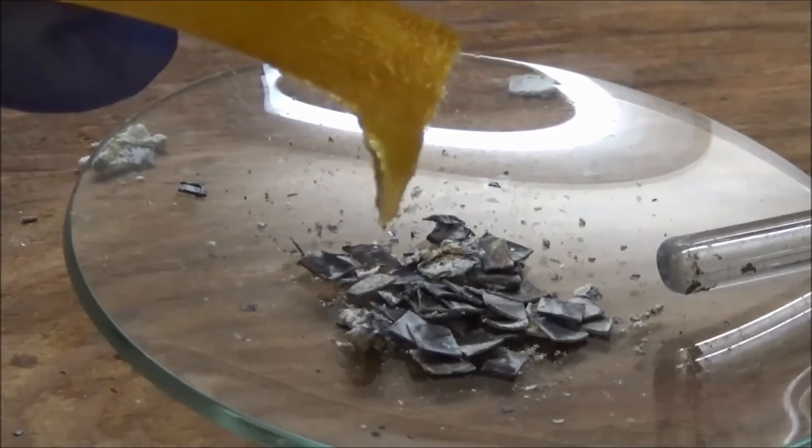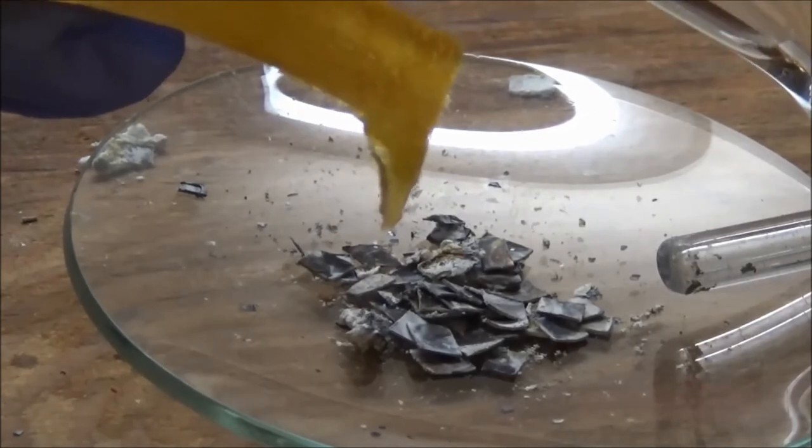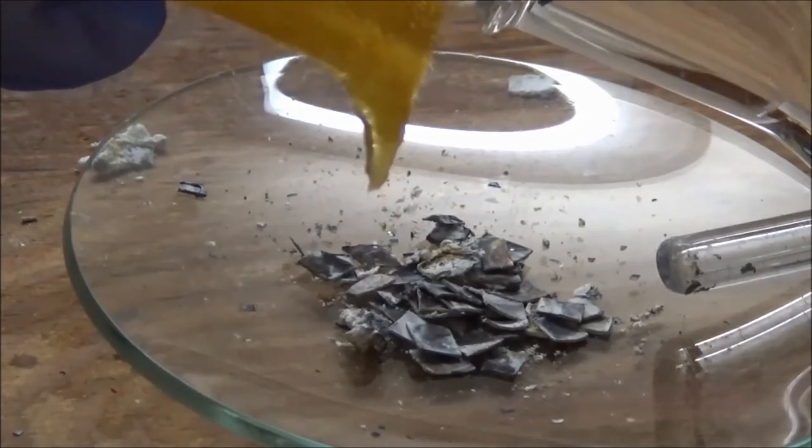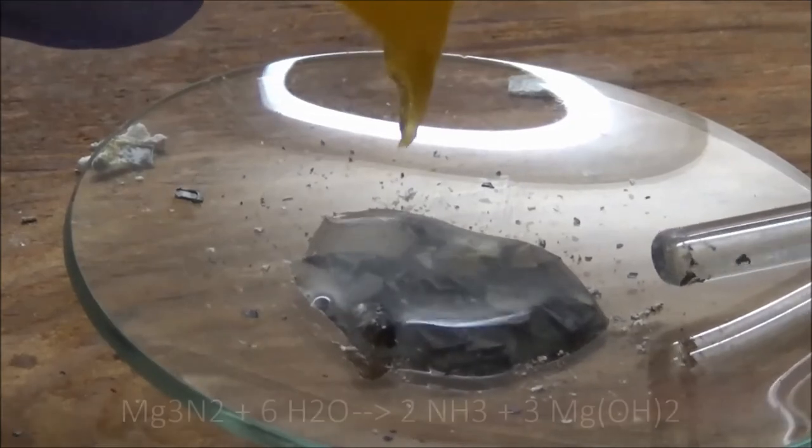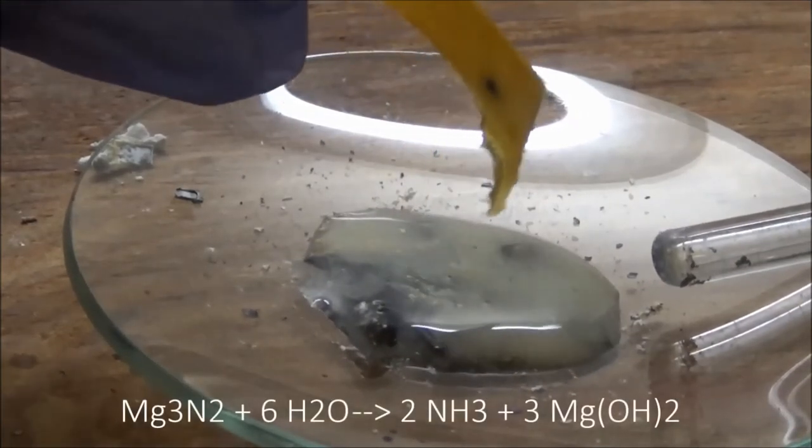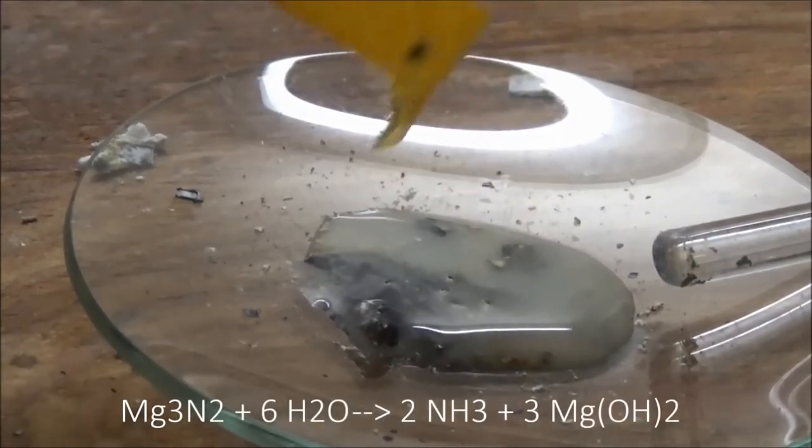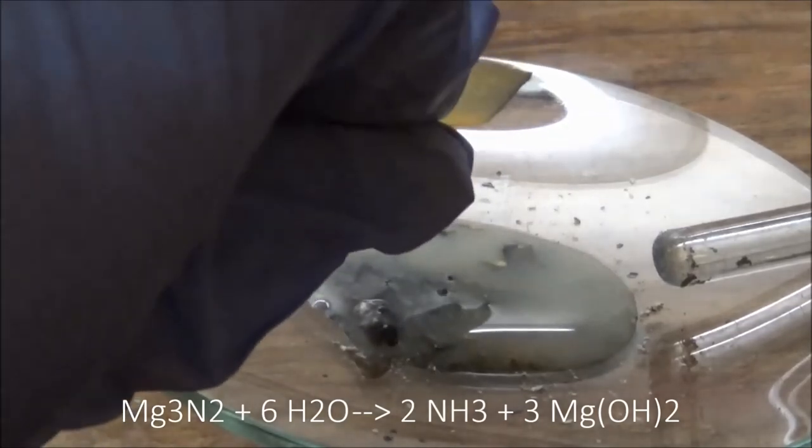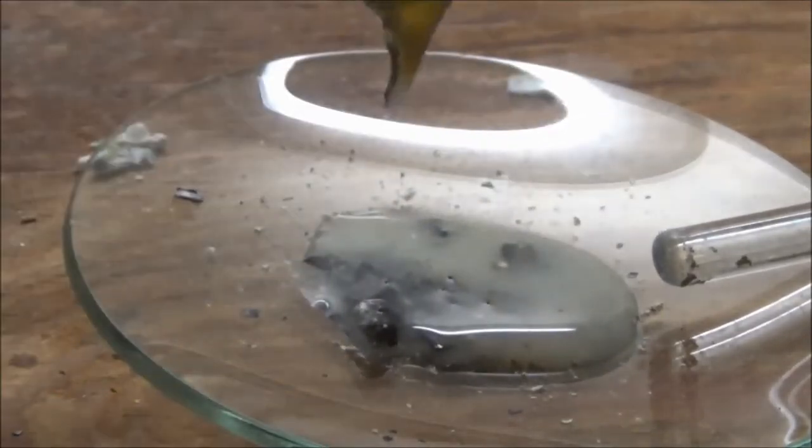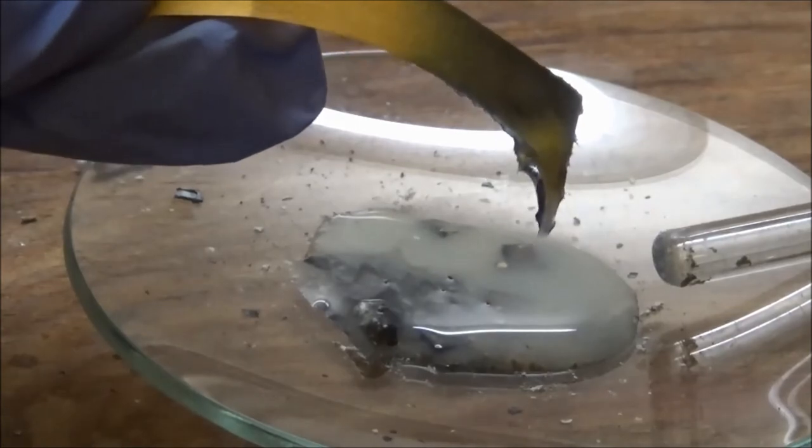I held a wet pH paper over the pieces as I added water. Magnesium nitride makes ammonia with water and the pH paper would detect any. Bubbling and a blue-green color indicated ammonia. Also noticed the milky color of the water from the magnesium hydroxide.